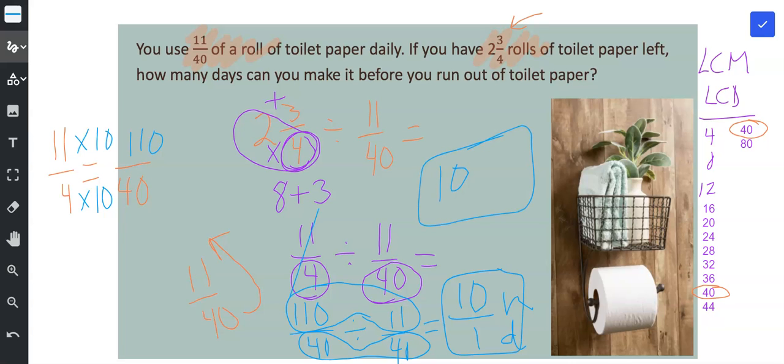We need to figure out our units and reread the question and make sure we really answered it. So we're being asked how many days can you make it before you run out of toilet paper? Well, 10 days because 11/40 fits into 2 3/4 ten times. So you have 10 days of 11/40 of a roll of toilet paper.